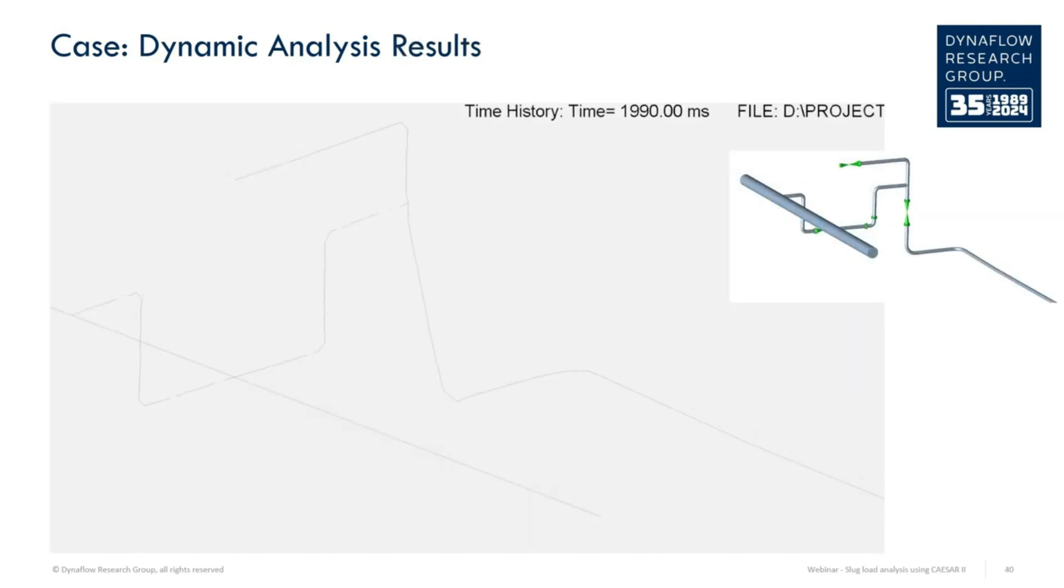Running this for the sparsely supported model gives us stress due to the slug loads of about 133 MPa. Looking at the dynamic plot in CSR2, it becomes apparent that mainly the long horizontal line and the section near the valve has a lot of flexibility. This had also already been indicated by the modal analysis. The locations with the highest stress in the dynamic analysis are at the ends of this long horizontal segment.